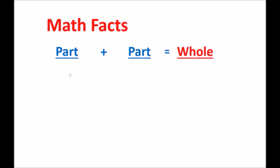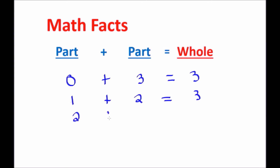Now what does this mean in terms of the math facts or addition facts? We know that when we add zero plus three, we get three, which is the whole. We also learned that one plus two equals three. We can also do two plus one because of the commutative property of addition, where we can switch the numbers around and it still gives us the same amount. And three plus zero also equals the number three. So for the number three, we have four different ways to get to the number three.